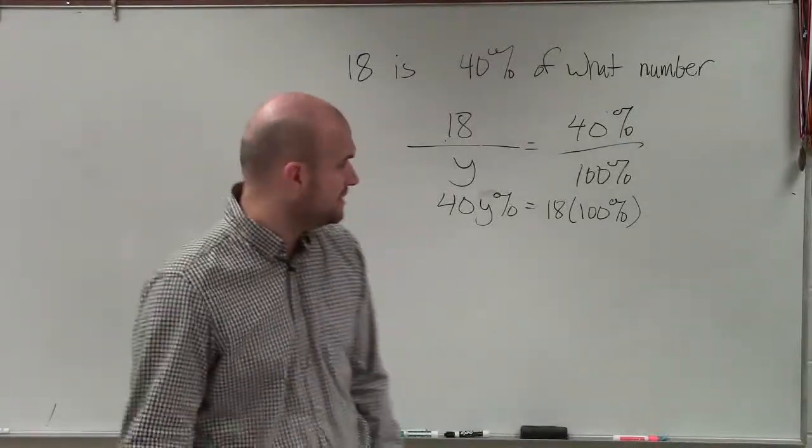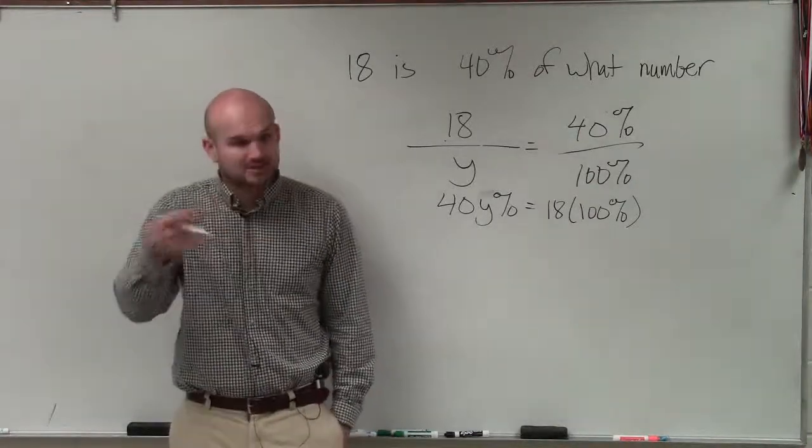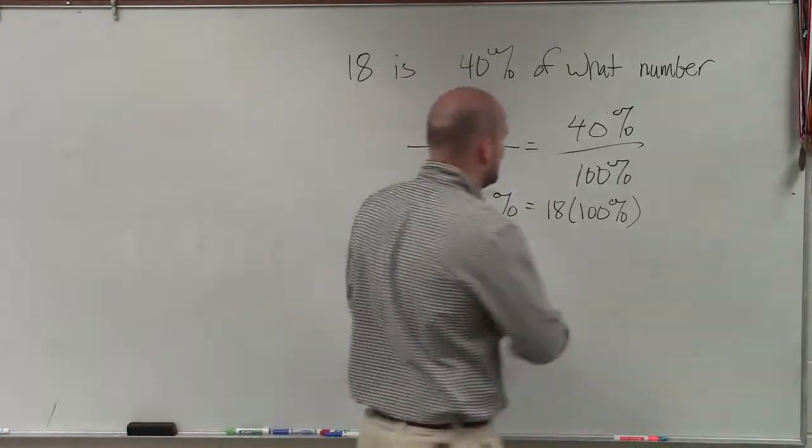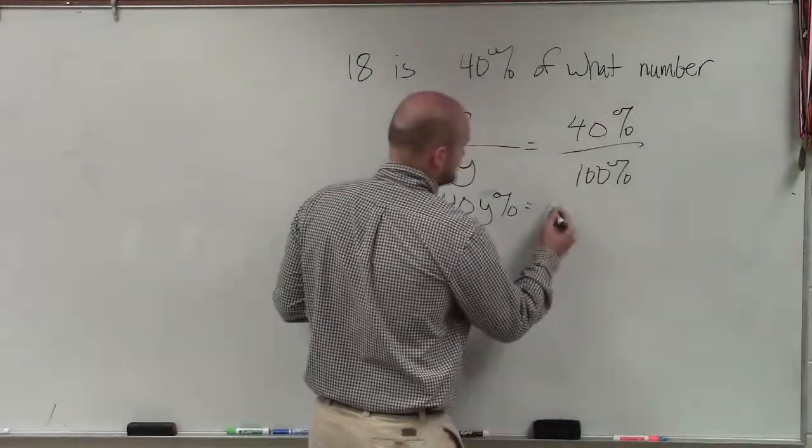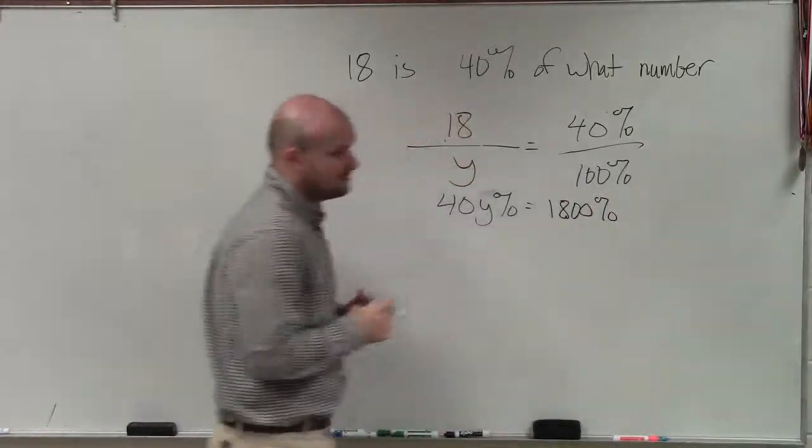All right, let's just write down this stuff and get it through. So, obviously, 40 times y, this is going to be 40y%. 18 times 100% is going to be 1,800%, correct?